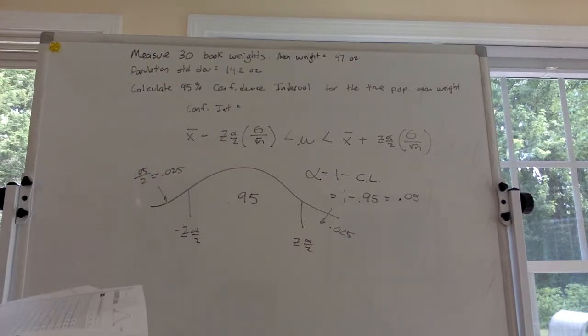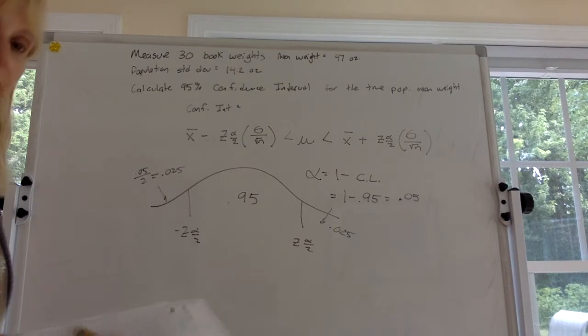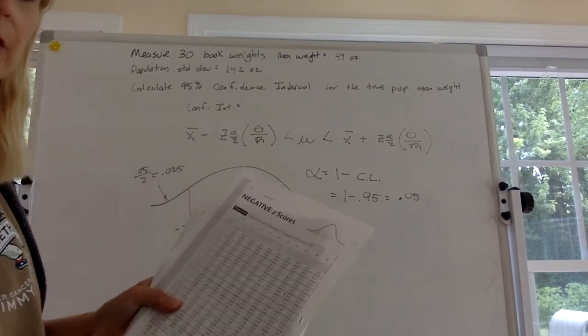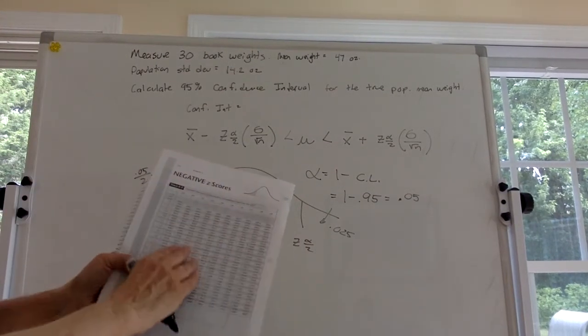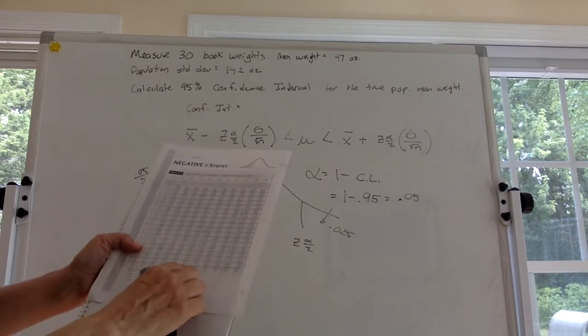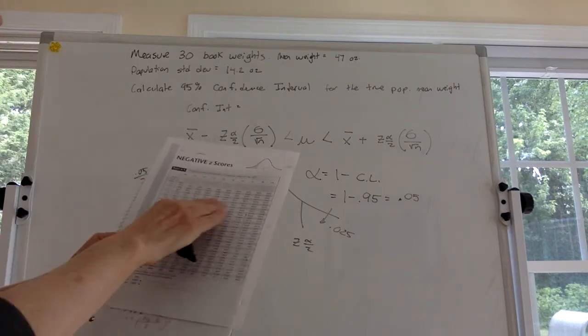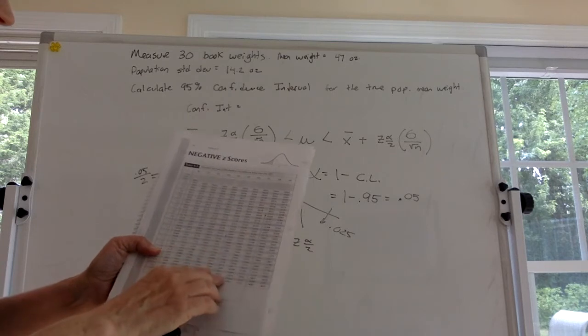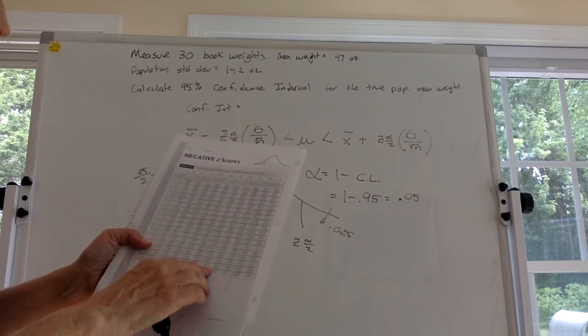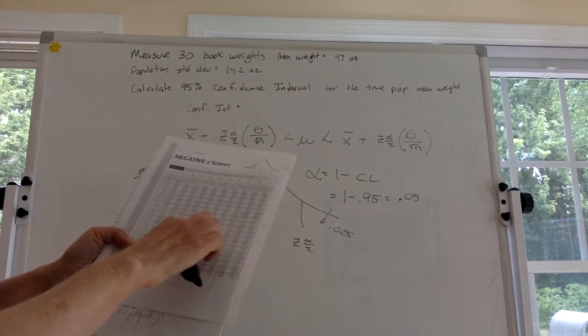All right, so what do you do? It's easy to take the negative side and you're looking for 0.025 in the body because you know the area. You're trying to find z that corresponds to it. And I think this one is in here exactly.